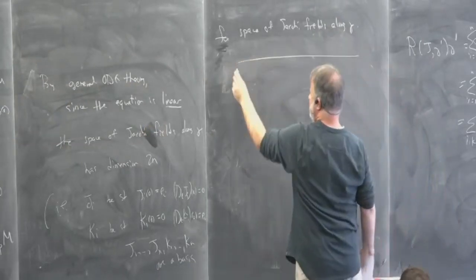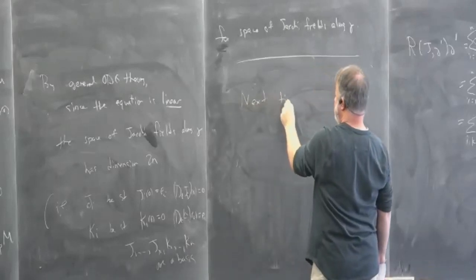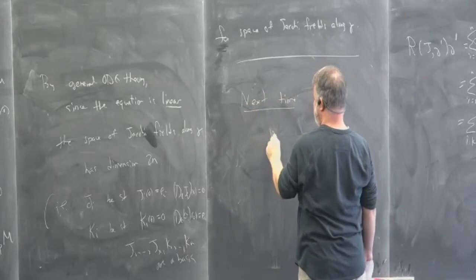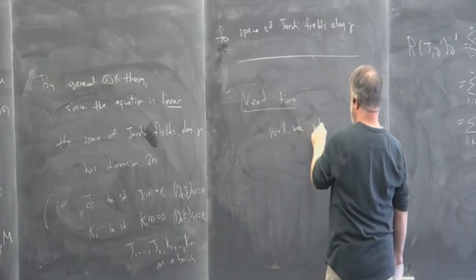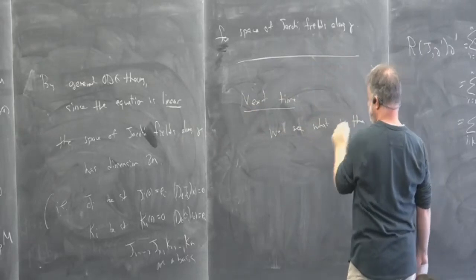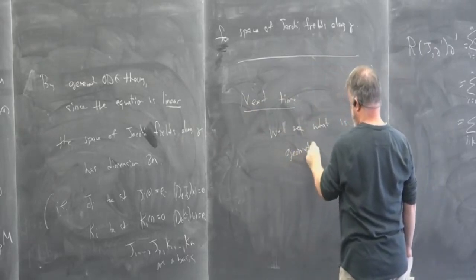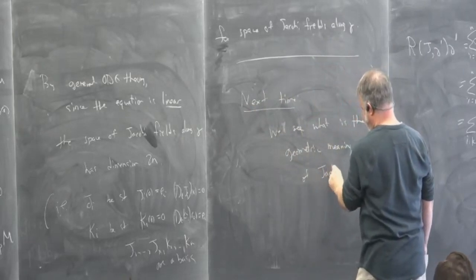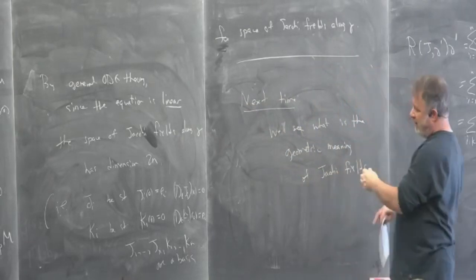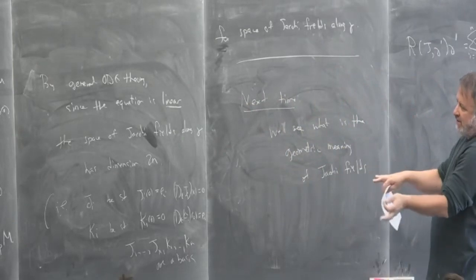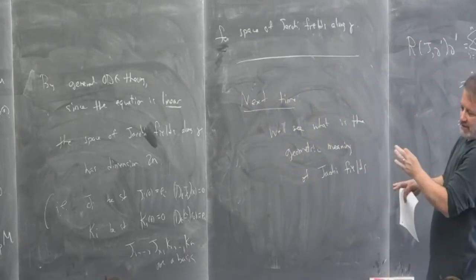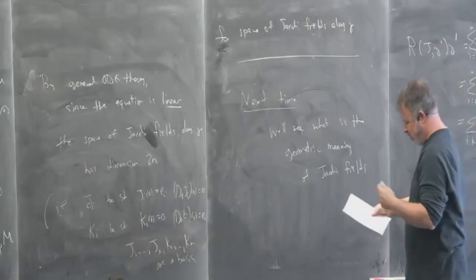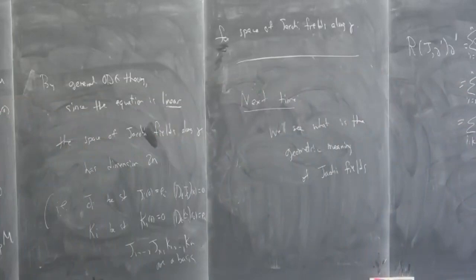So that's where we stop for today. Next time, we'll see what Jacobi fields are good for — the geometric meaning. We've already hinted with the motivational discussion that they should be related to the spreading of geodesics and to singularities, i.e., critical points of the exponential map. We're going to do all of those things. I should be able to finish chapter five on Wednesday; if not, I'll need about 20 minutes after reading week. And then we move on to chapter six.